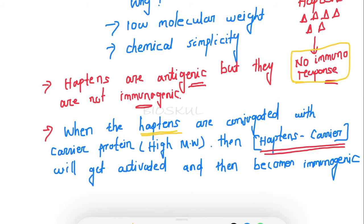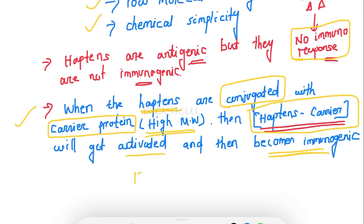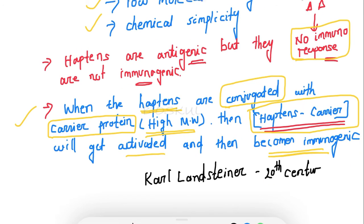Because of their low molecular weight and chemical simplicity, haptens cannot induce an immune response on their own. But when haptens are conjugated with a high molecular weight compound called a carrier protein, the hapten-carrier conjugate gets activated and becomes immunogenic.